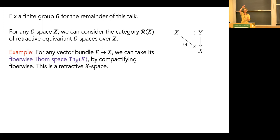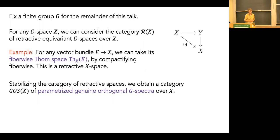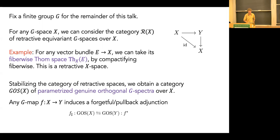For example, given a vector bundle I can take a fiberwise Thom space: over every point I have a vector space which I can compactify, giving a retractive X-space based at the copy of X at infinity. Collapsing those points at infinity gives the ordinary Thom space. I can stabilize the category of retractive spaces to get GOS(X) — parameterized genuine orthogonal G-spectra over X. We're working over X, in an equivariant way, and in a stable way.